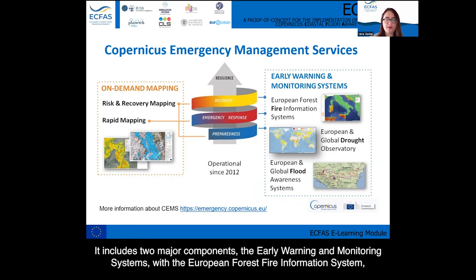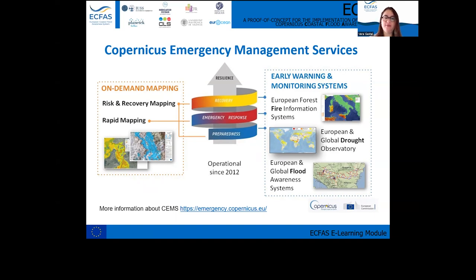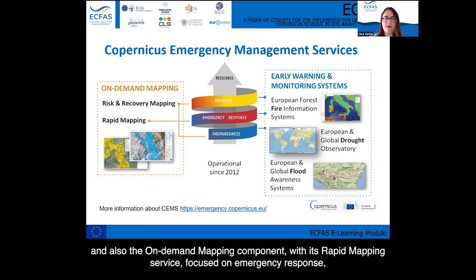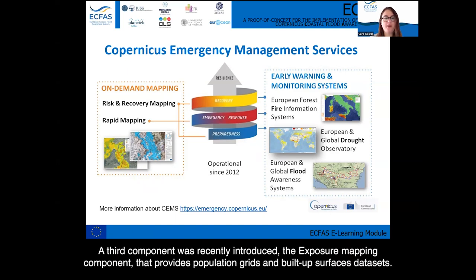It includes two major components: the early warning and monitoring systems with the European Forest Fire Information System, the European and Global Drought Observatory, and the European and Global Flood Awareness Systems. Also the on-demand mapping component with its rapid mapping service focused on emergency response and the risk and recovery mapping that addresses the other phases of disaster crisis management. A third component was recently introduced — the exposure mapping component that provides population grids and built-up surfaces datasets.